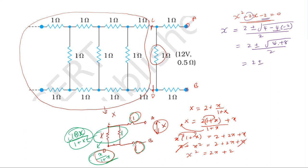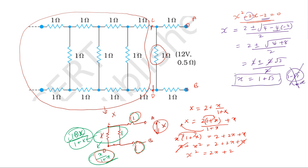That simplifies to X equals 2 plus or minus root 12, divided by 2, which gives X equals 1 plus root 3. We take the positive root, so the external resistance is 1 plus root 3 ohm, and the internal resistance is 0.5 ohm.